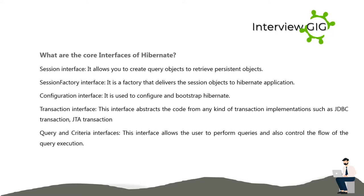What are the core interfaces of Hibernate? Session interface — it allows you to create query objects to retrieve persistent objects. Session factory interface — it is a factory that delivers the session objects to Hibernate applications. Configuration interface — it is used to configure and bootstrap Hibernate. Transaction interface — this interface abstracts the code from any kind of transaction implementation such as JDBC.